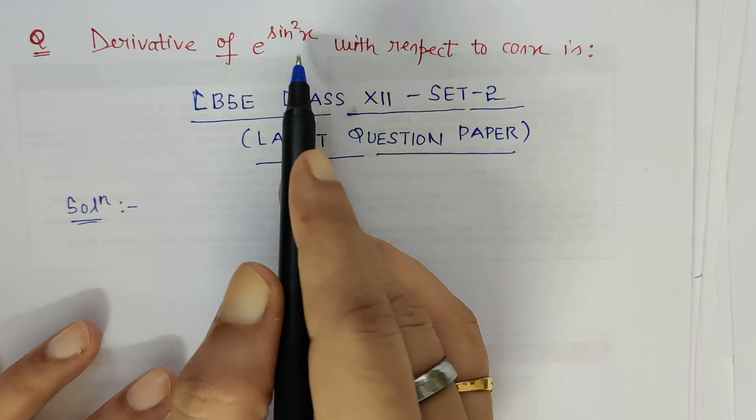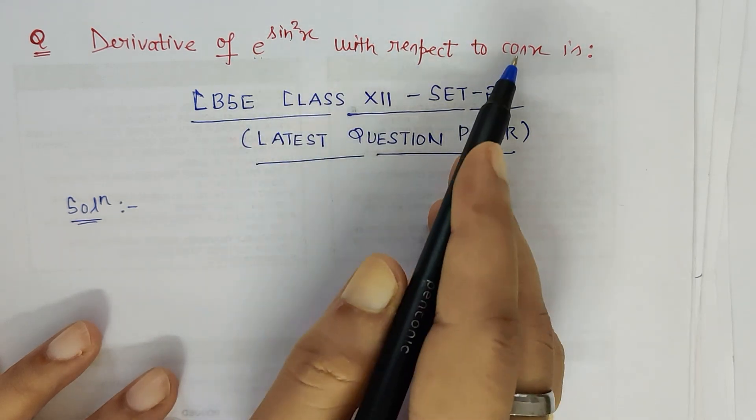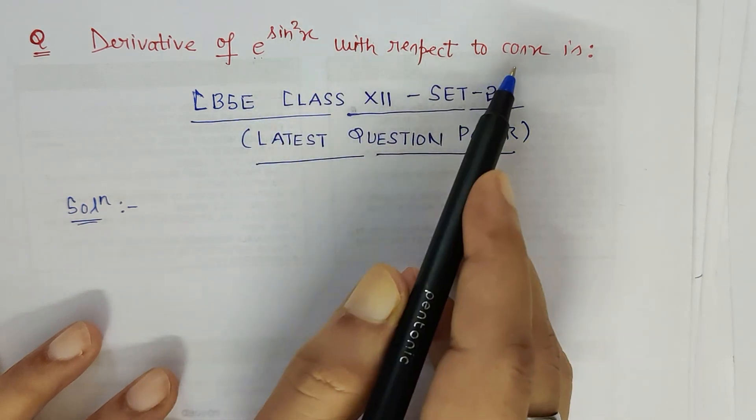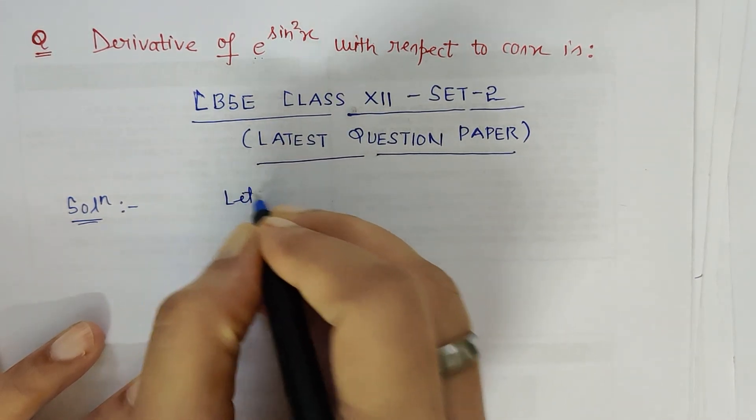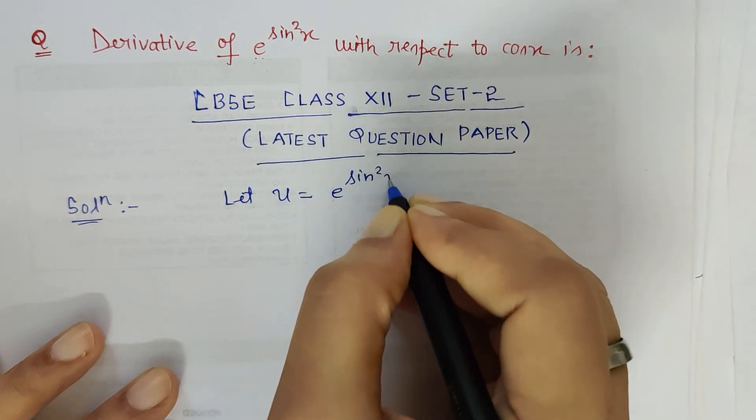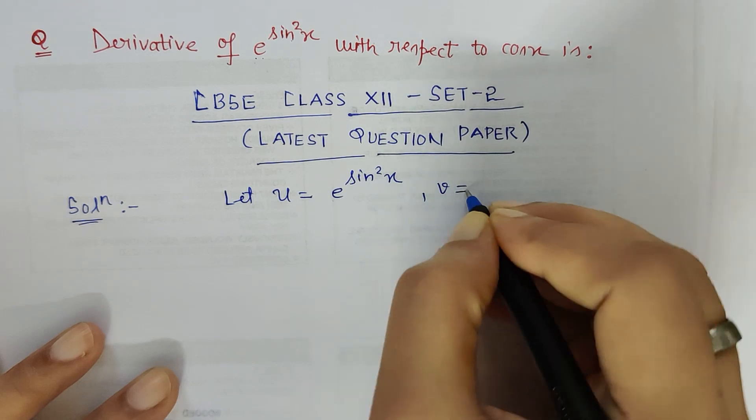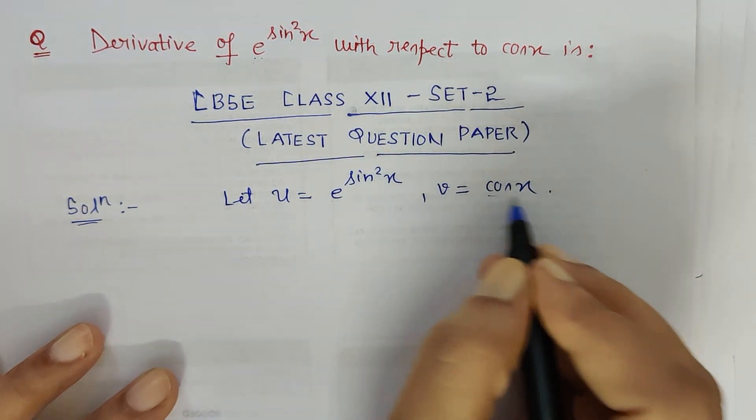So whenever we have such a question, what does it mean? It means that we have to find du upon dv. That means these two functions are to be assumed as u and v. So let u equal e to the power sin squared x and let v equal cos x. We have to find the derivative of this with respect to this.